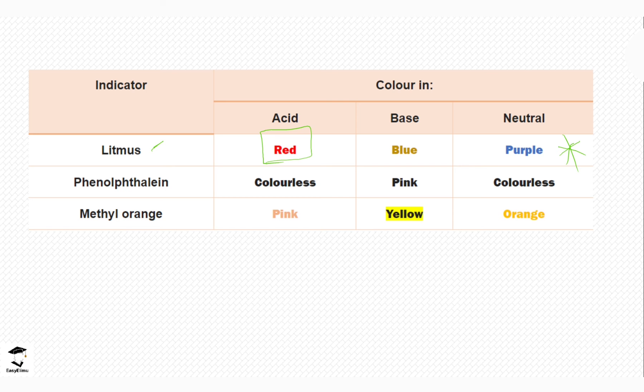Phenolphthalein is colorless in acids, pink in bases, and colorless in neutral solutions. This indicator is very important—it is commonly used to show the endpoint between the reaction of a base and an acid. We will come to that later. Because of this unique property, it's colorless in both acids and neutral solutions but turns pink when it's in a basic solution.